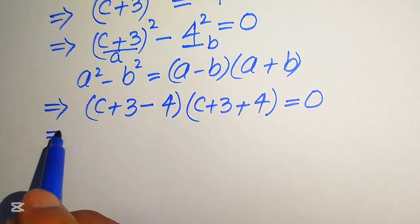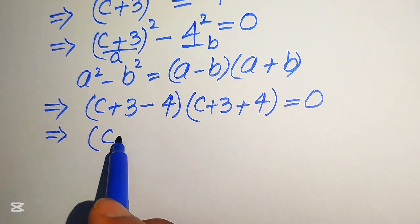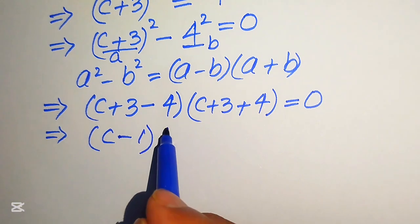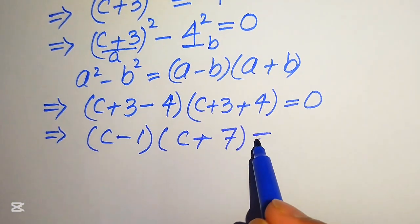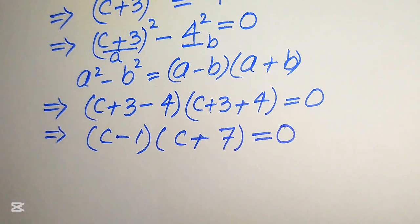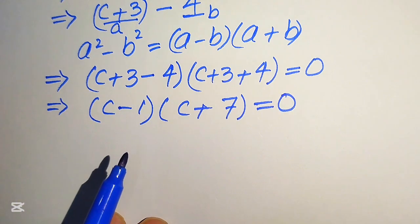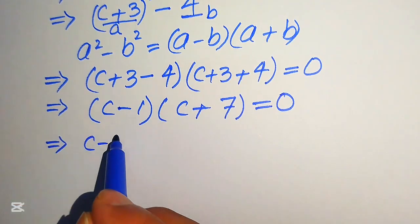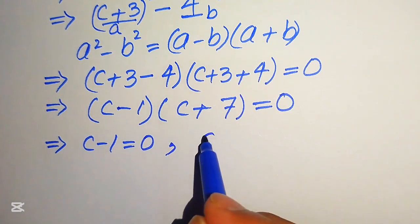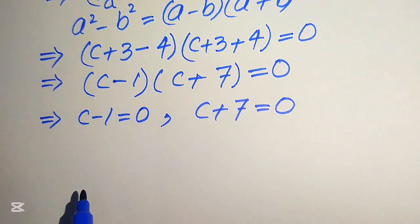Further simplification: combining like terms, 3 minus 4 gives minus 1, and 3 plus 4 gives 7. So the equation becomes (c minus 1)(c plus 7) equals 0. We now split into two cases: case one is c minus 1 equals 0, and case two is c plus 7 equals 0.